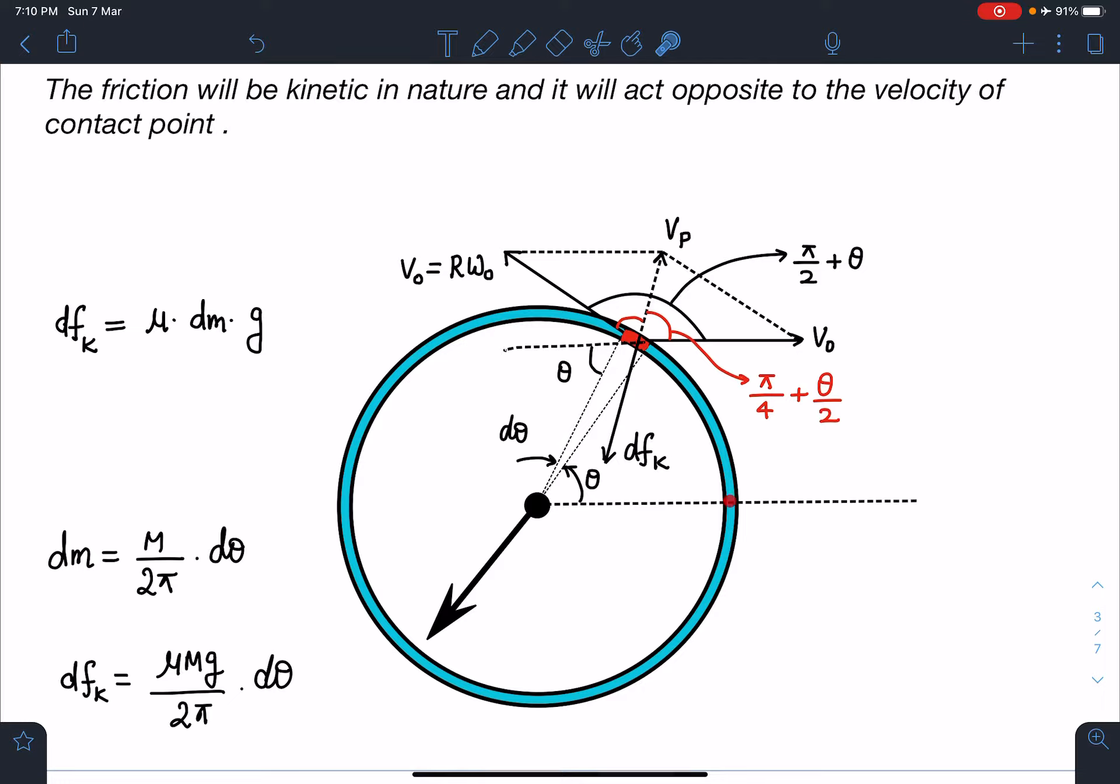You can see here V₀ and R ω₀, so this angle is 45 degrees. If you check at this point, there is no velocity at all, so friction won't be acting at this particular instant. At the topmost point, only V₀ is there, so R ω will be in this direction with zero velocity, so there is no tendency of relative motion. At different points, direction of friction will be different, so I have chosen a general point.